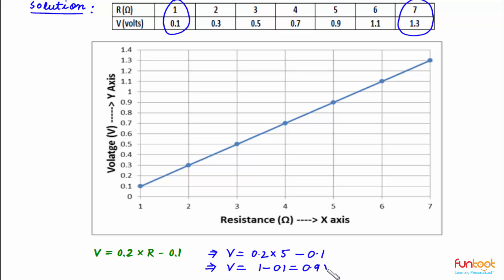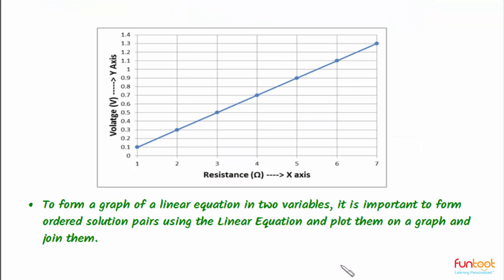So we made use of this formula for finding the voltage when resistance is set to 5 ohms, and the voltage comes as 0.9 volts. Let's summarize what we have learned from this question.